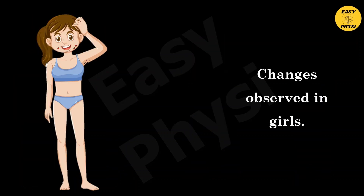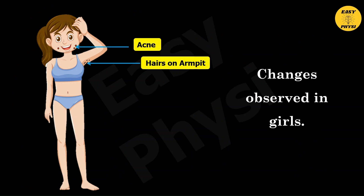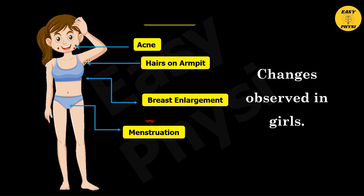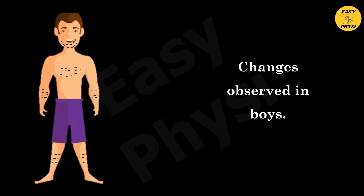There are certain changes observed in girls. They get acne on their face, they get hair on their armpits, their breast size gets enlarged, they start menstruating, and they grow taller.